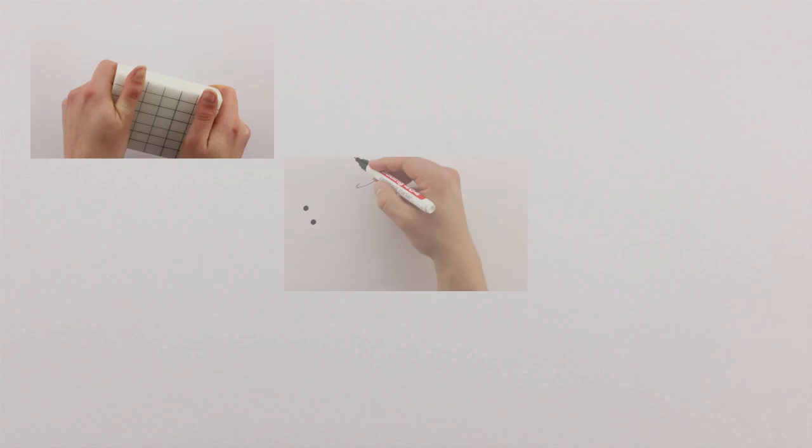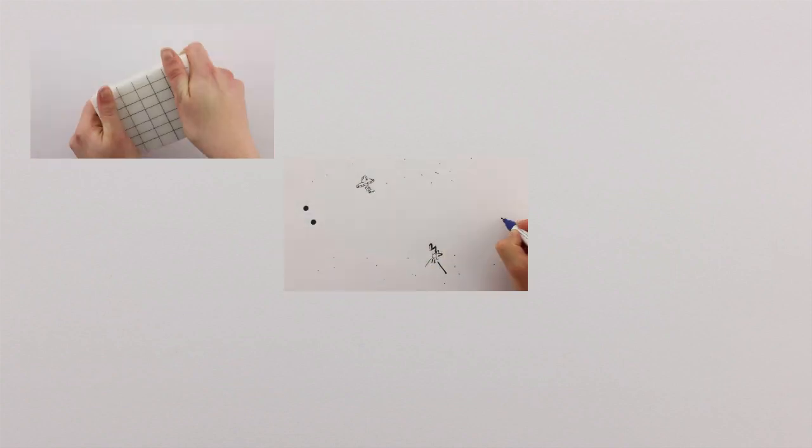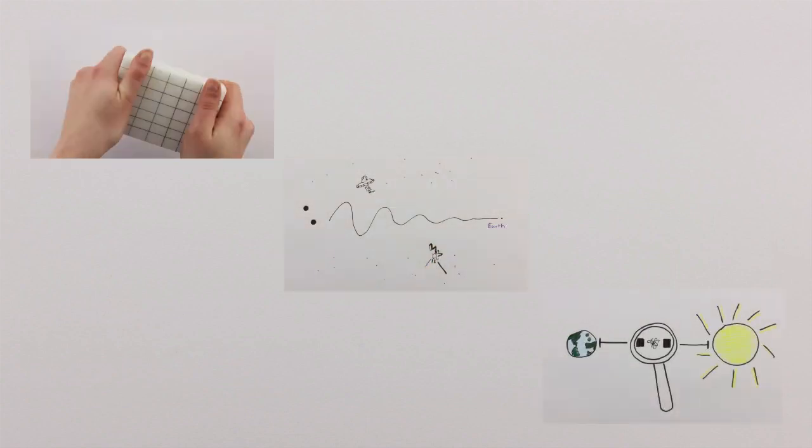But we have the problem that the fabric of spacetime is very stiff, and even very large objects are far away and cause only small ripples. This means that the measurable effect, that is the change in the distance between two objects, is also tiny.